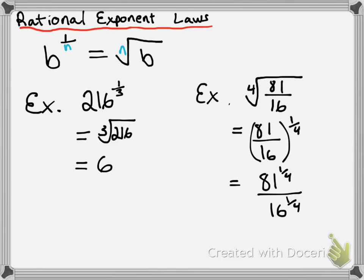Working backwards: now that we have each of them to the power of 1 over 4, I'm going to take the fourth root of each of them. So I have the fourth root of 81 over the fourth root of 16. I can easily take the fourth root of each of those — the fourth root of 81 is 3, the fourth root of 16 is 2. So my answer is going to be 3 over 2. That's our first rational exponent law.